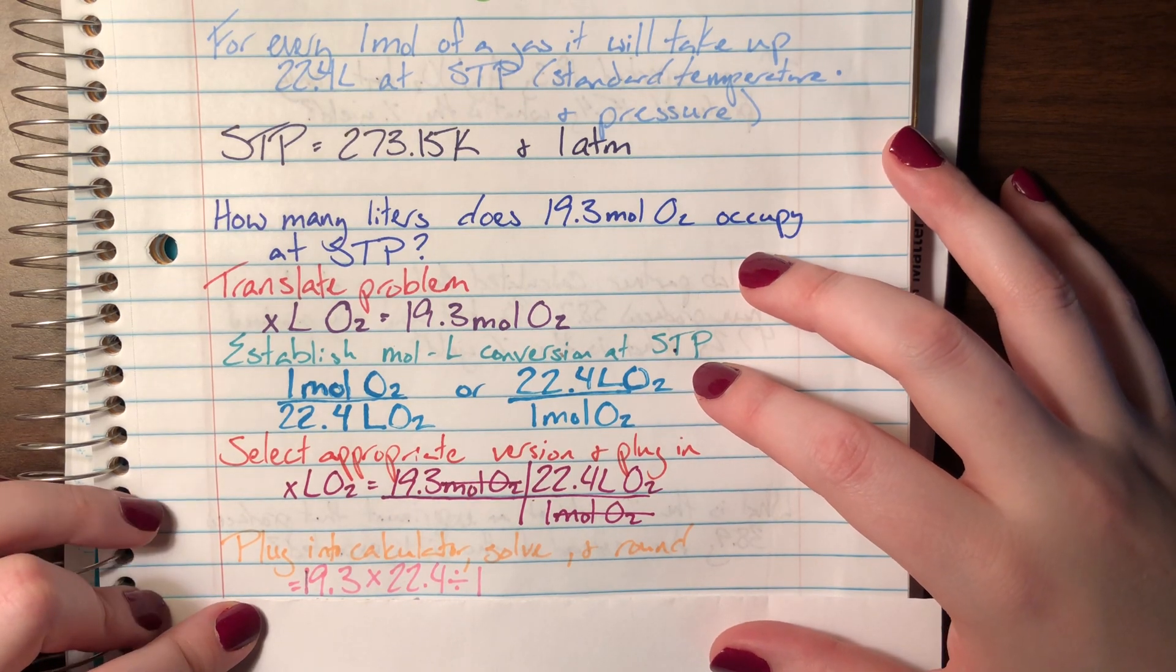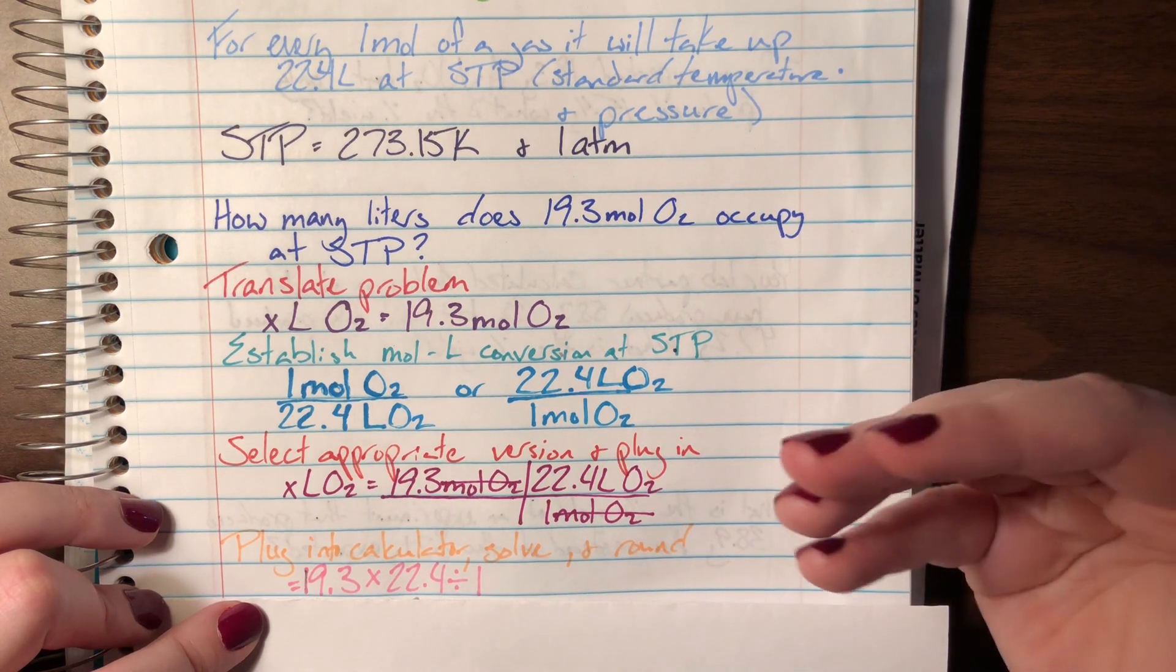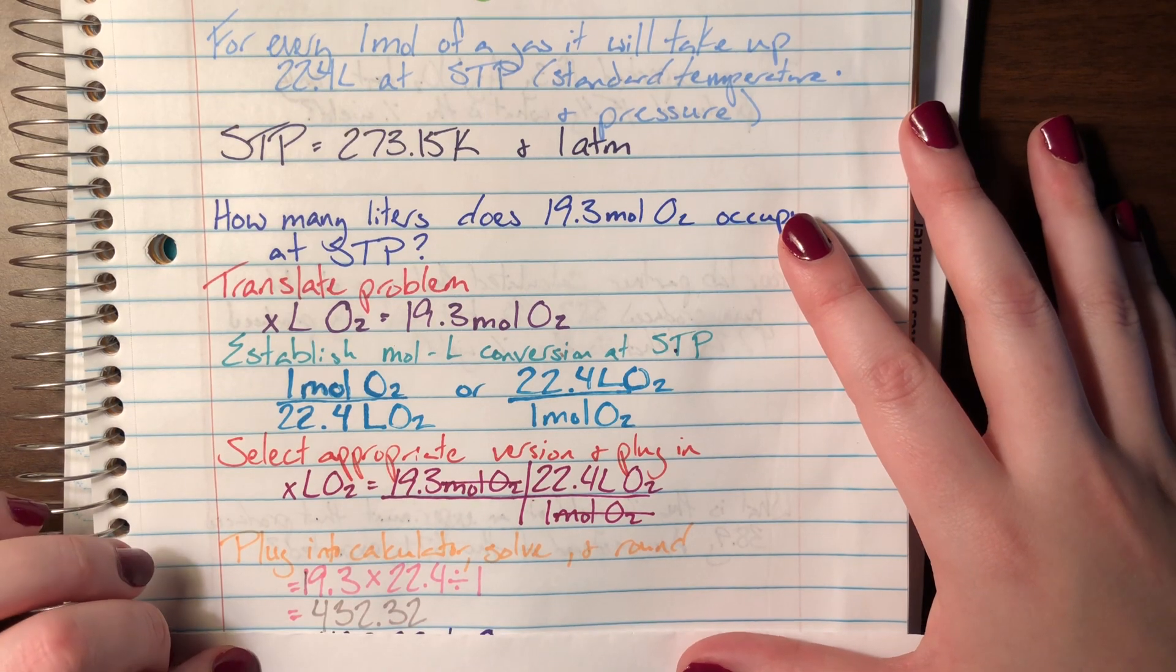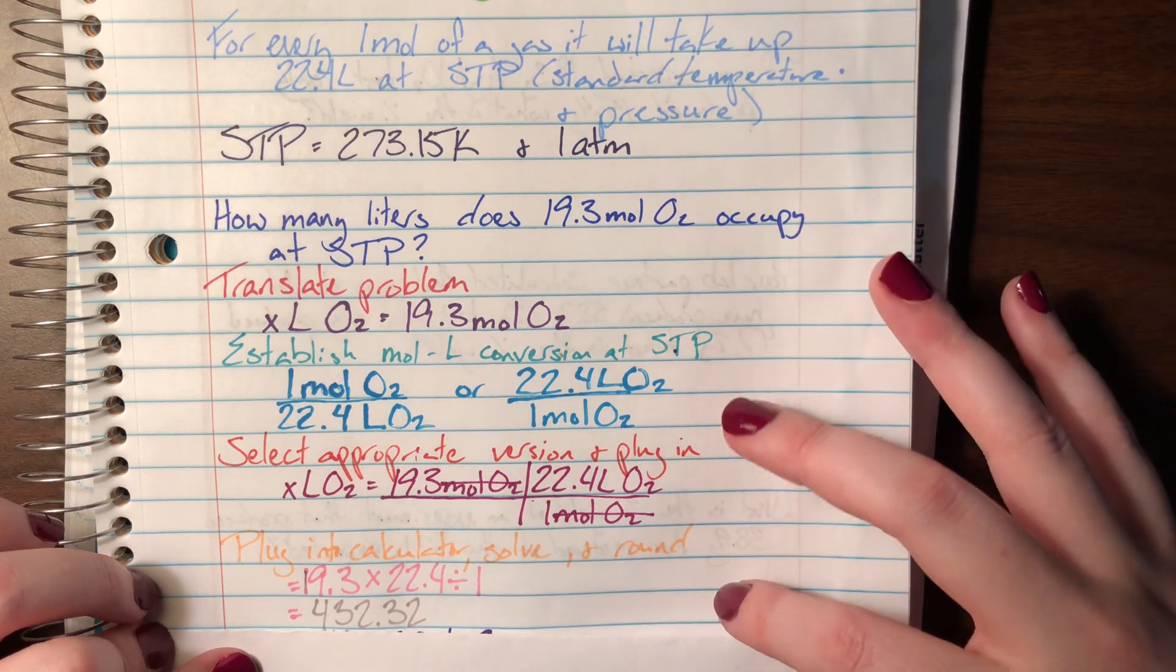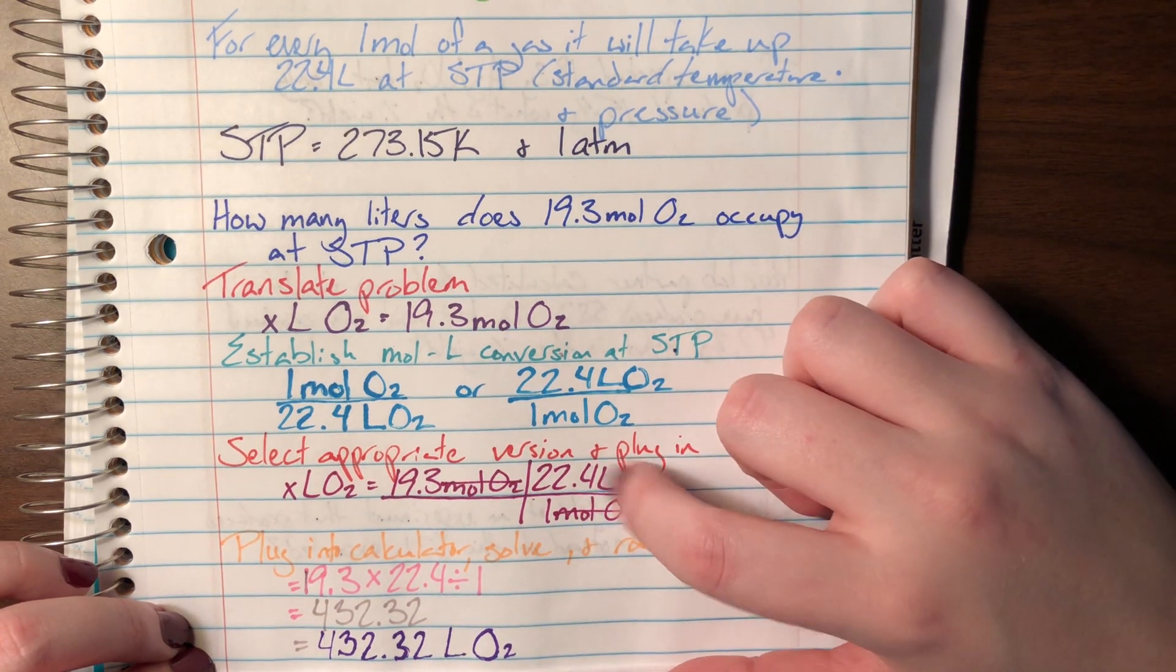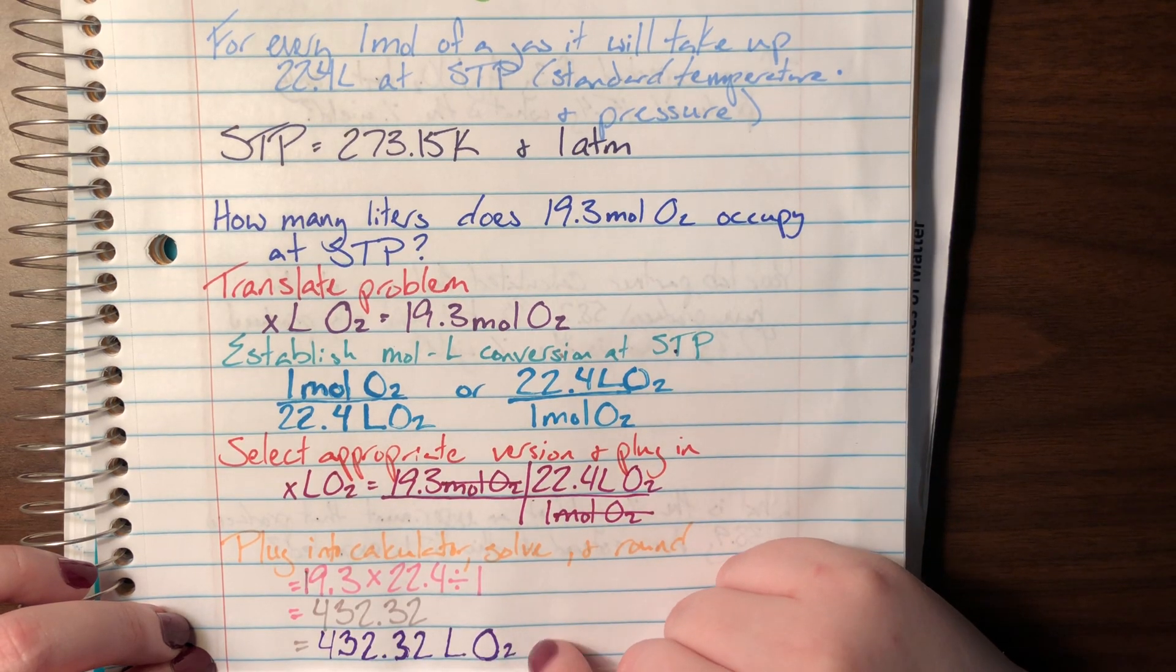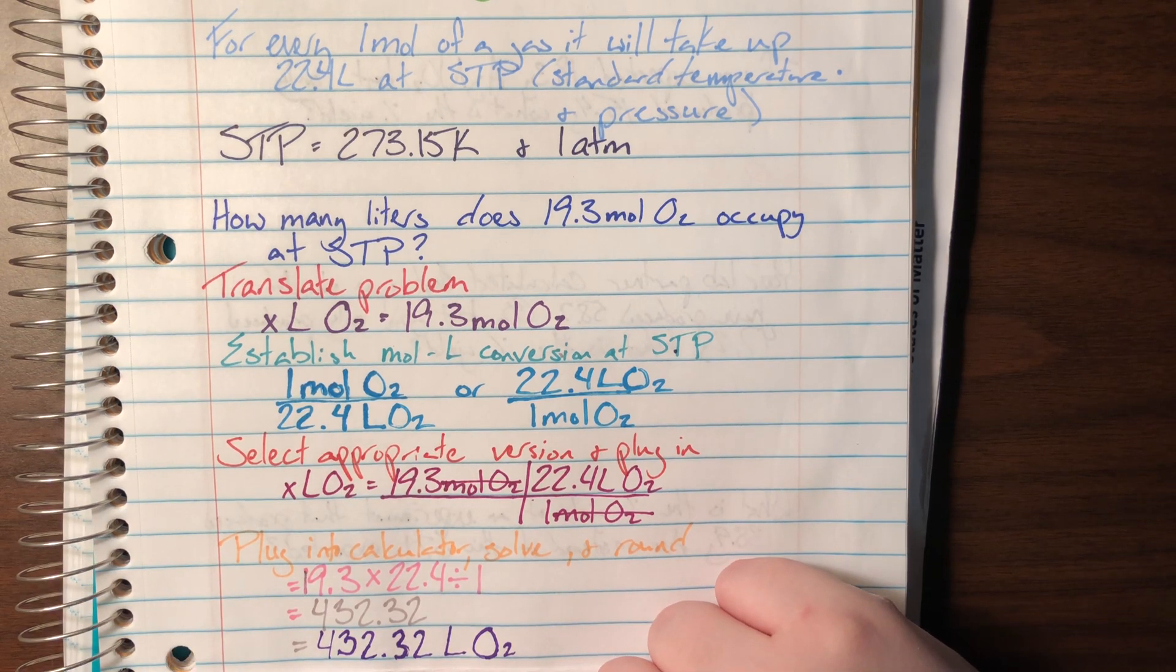Remember we multiply everything on the top, so that's 19.3 and 22.4 and we divide by everything on the bottom, that's just one. And whenever I plug that into my calculator, I got the number 432.32 and that was a pretty nice number, so I didn't round it, but I did go ahead and I attached the unit, the only English that was left in my math, the unit that I said that I wanted. I went ahead and I attached that unit at the very end here, so my final boxed answer was 432.32 liters of oxygen.